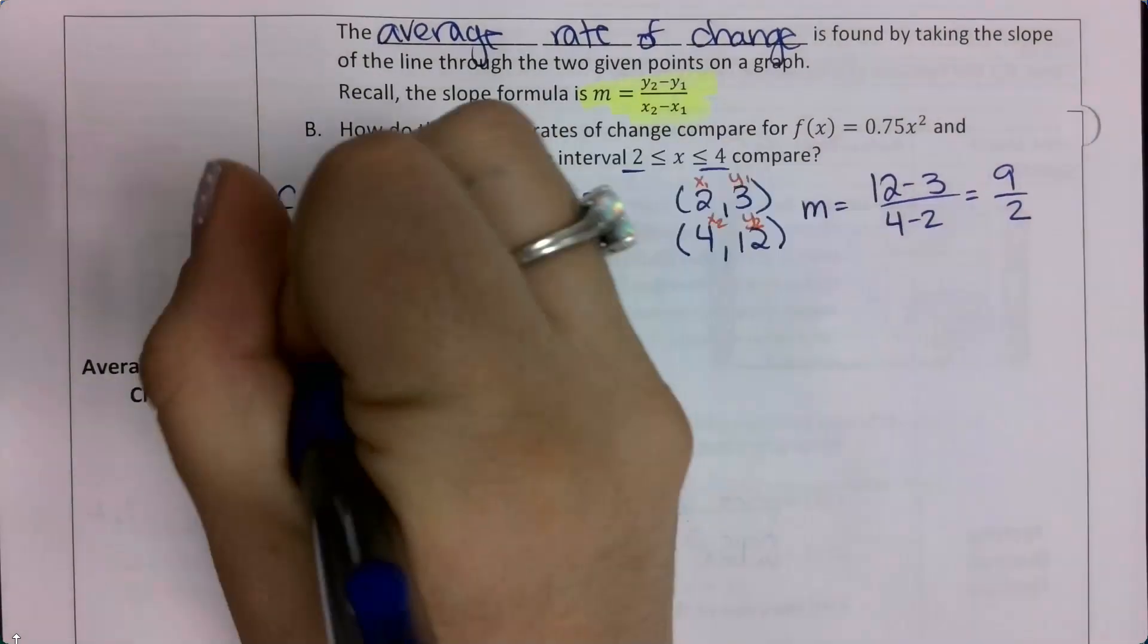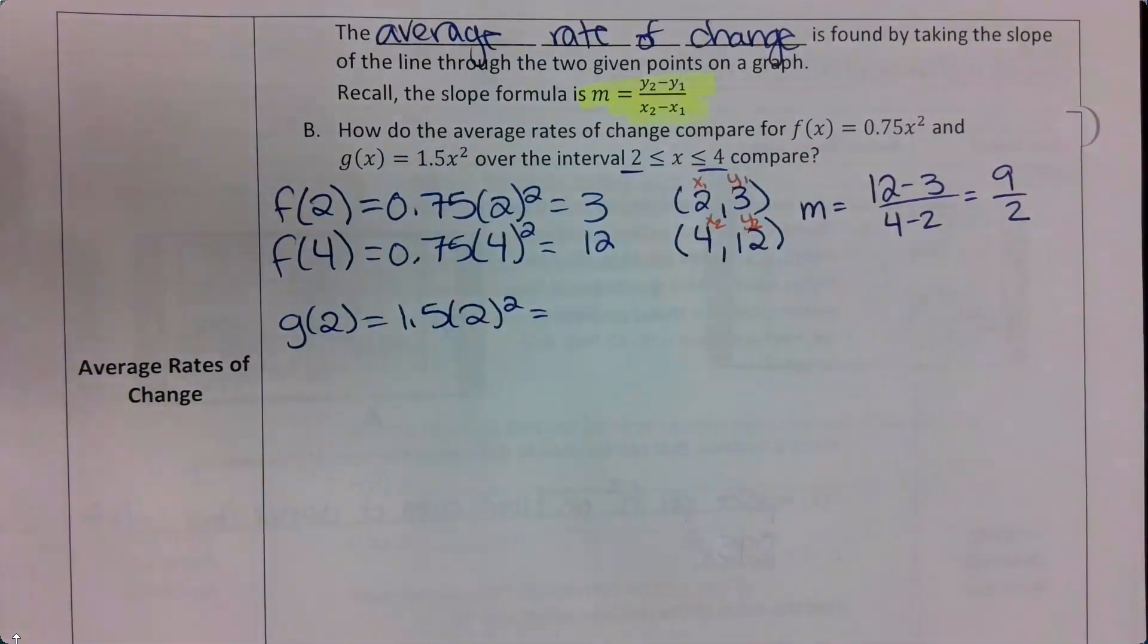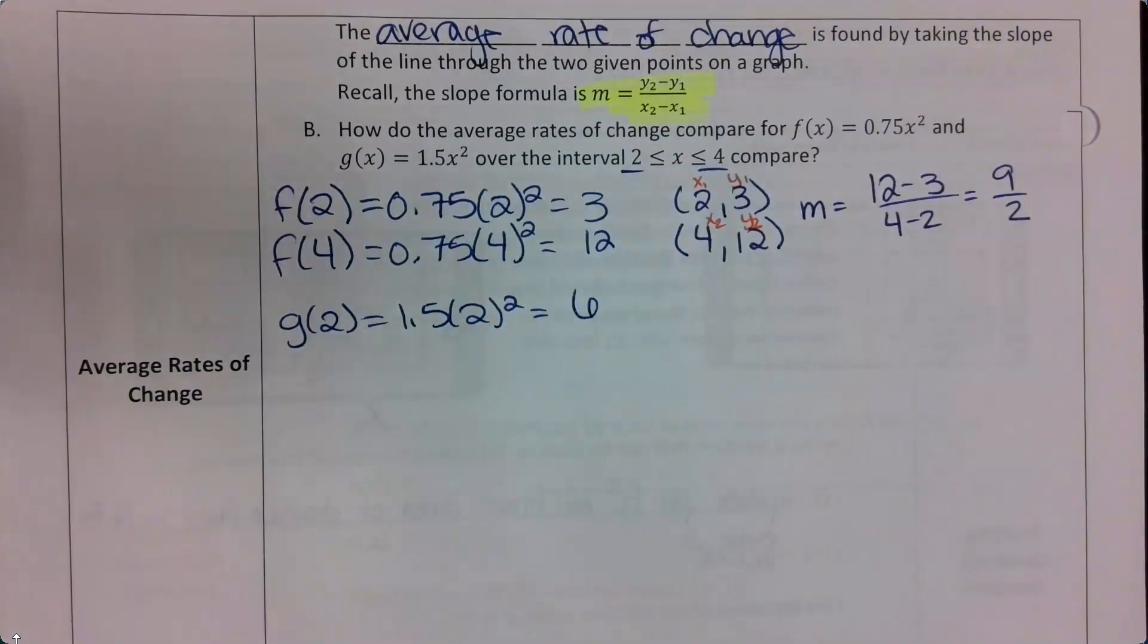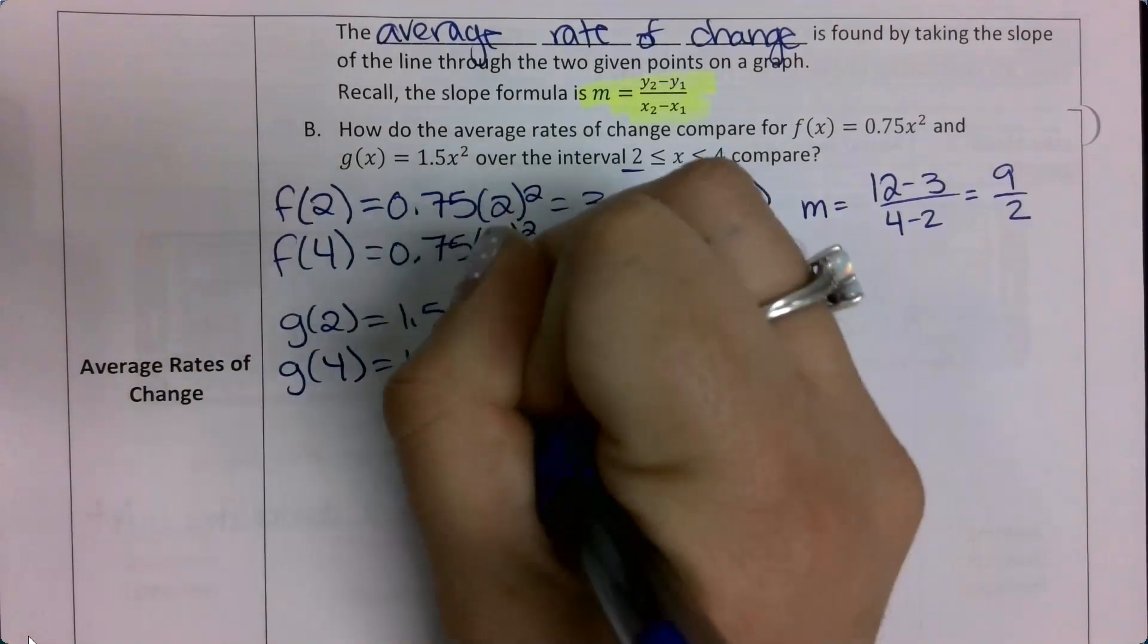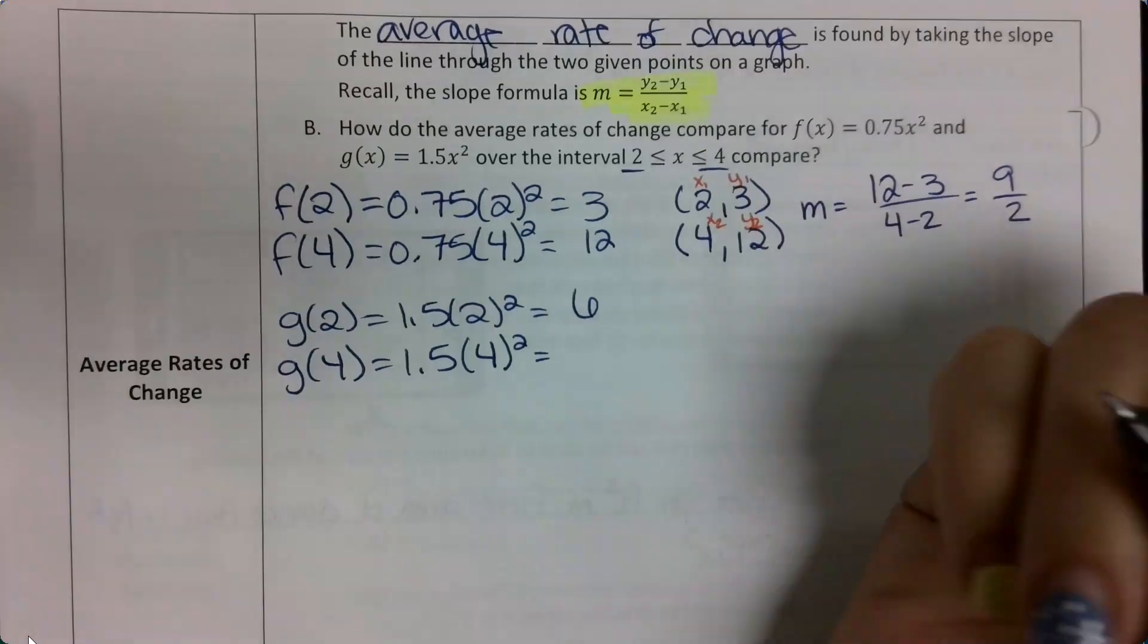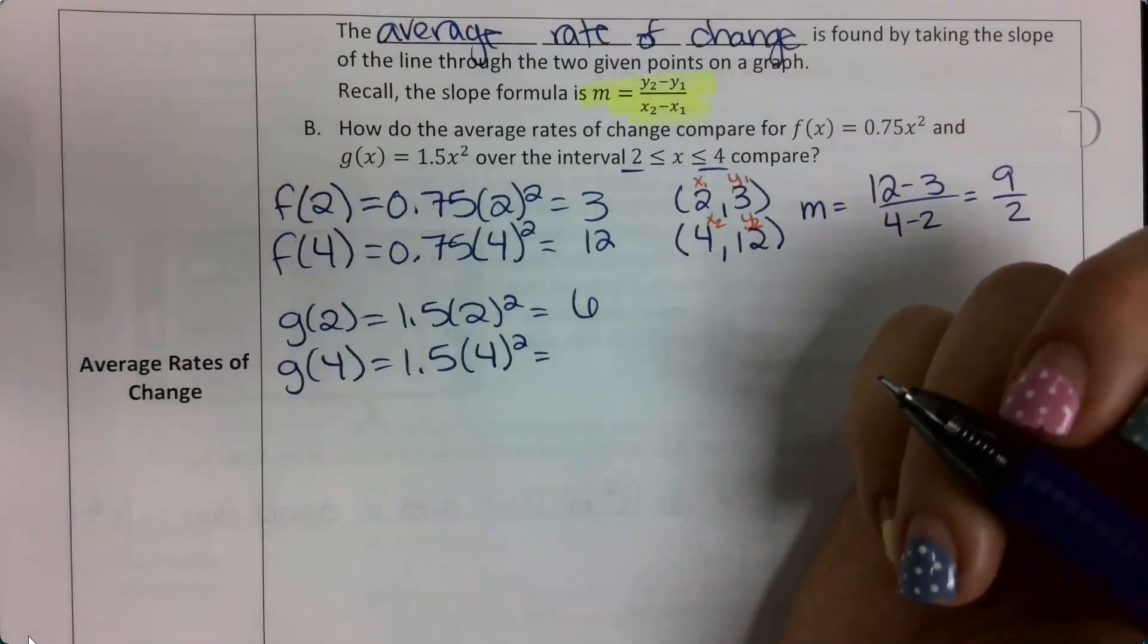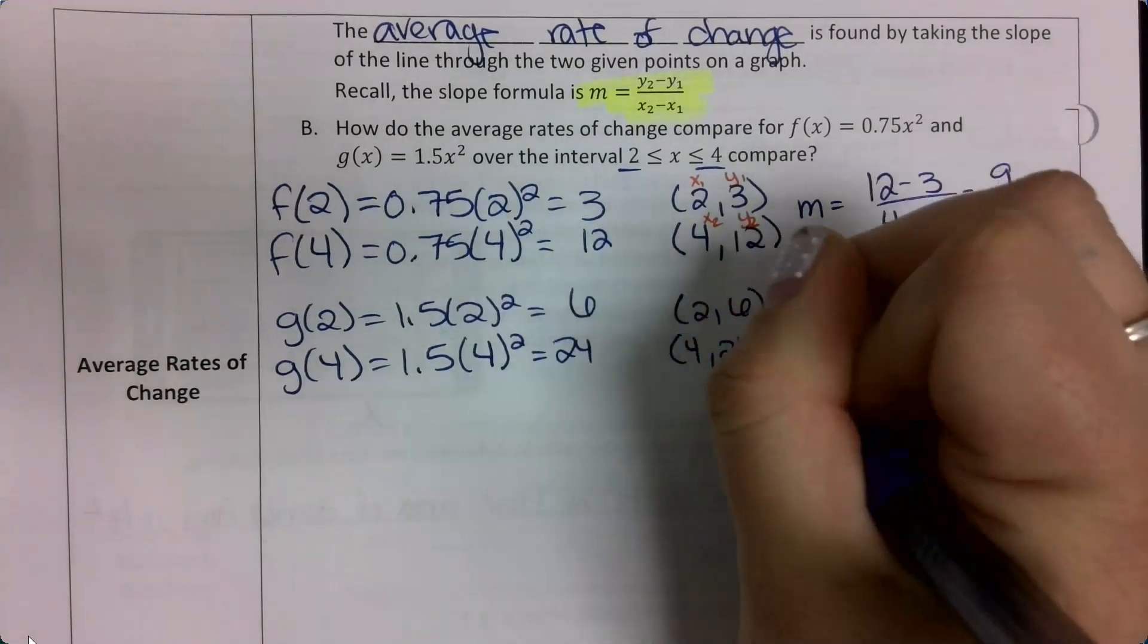Then I want to go ahead and do the same thing for my g function. So I'm going to plug in 2 to my g function, and I'm going to do the same thing for 4. So that gets us 24. So my coordinate points are 2 comma 6, because I plugged in 2, I got out 6, and then 4 comma 24. I plugged in 4 and got out 24.